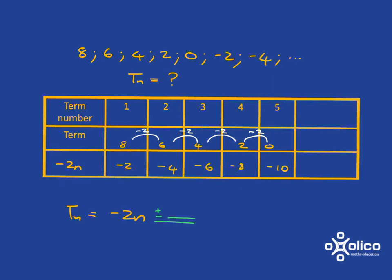Your next step should have been to go and fill in what minus 2n just on its own would be, and then look to see what kind of correction you'd actually need to make to get what you want. And it's probably easiest to see it here. To correct from negative 10 to get to 0, you would have had to add on 10. So your Tn is negative 2n plus 10.